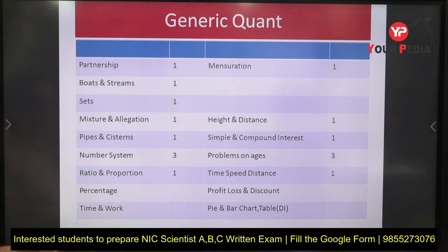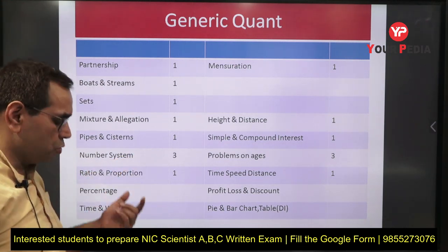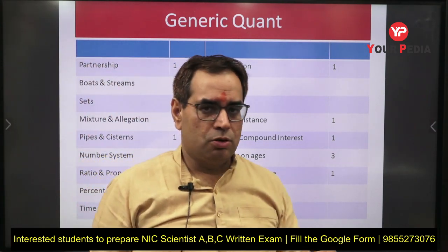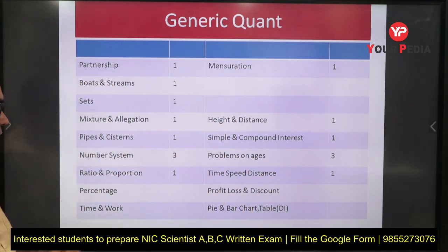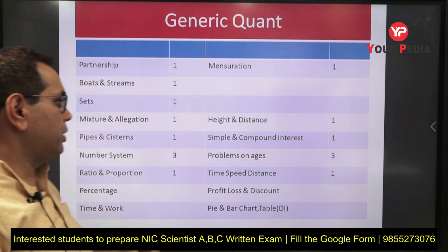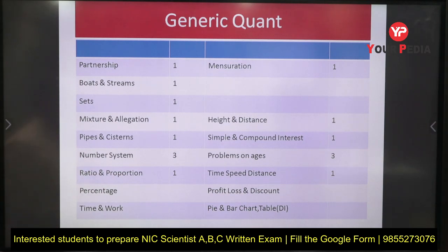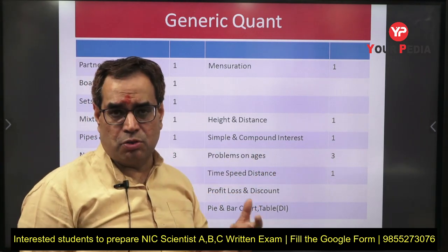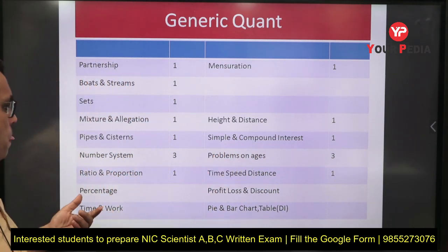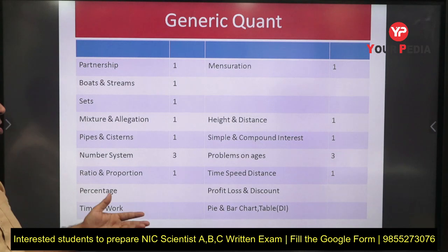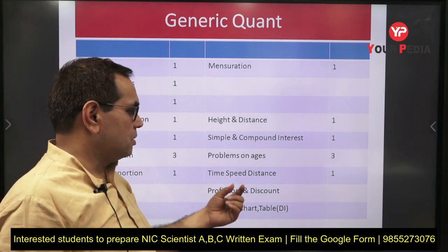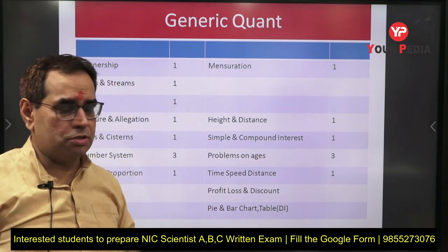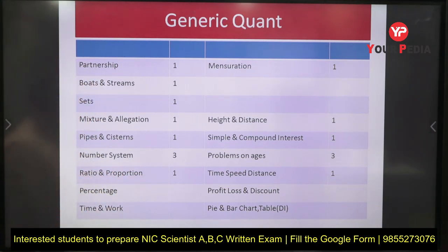From number system there were three questions, including one or two involving divisibility rules. Then ratio and proportion had one question, proportion had one question, height and distance had one question, and simple and compound interest had one question. Problems on ages had three questions — these can also be solved using ratio and proportion or system of linear equations. One question was from time, speed, and distance.